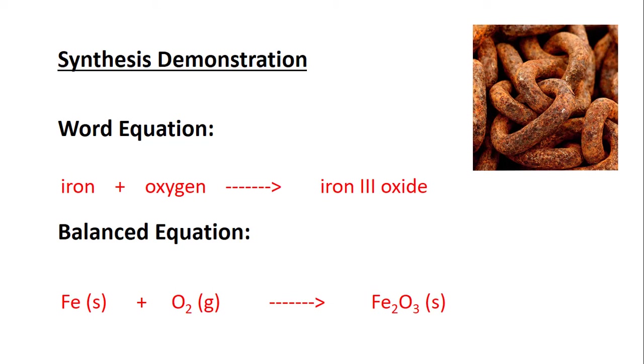The answer to that would look like this: we can include a 4 in front of the iron, a 3 in front of the O₂, and then a 2 in front of the iron(III) oxide. Now notice that we've got four iron atoms on each side and six oxygen atoms on each side, and we've got a nice balanced equation.